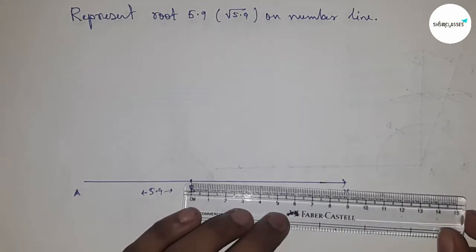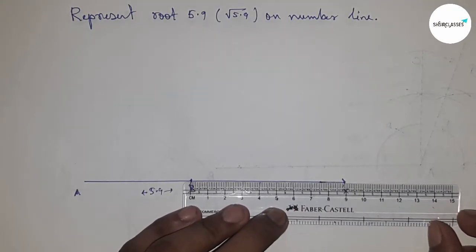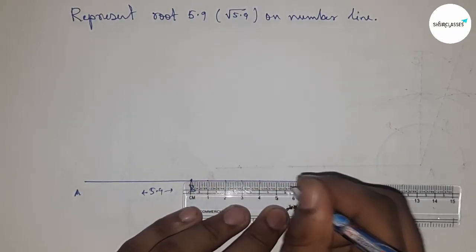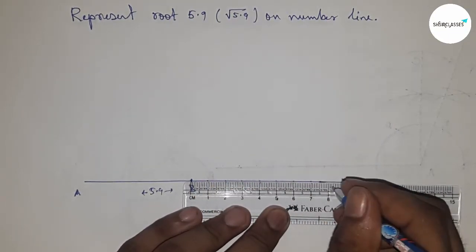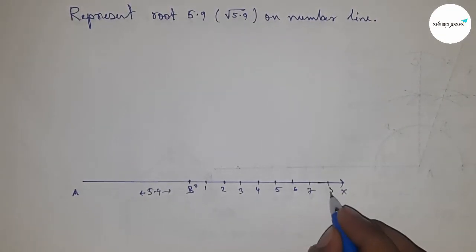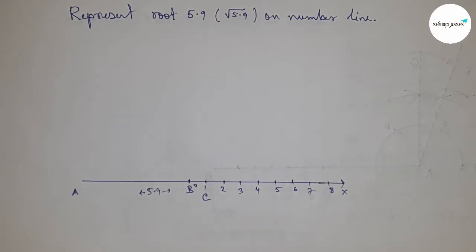Next, mark the numbers on the line from B to X. Mark all the numbers this way: 0, 1, 2, 3, 4, 5, 6, 7, 8 and so on. This is point C.